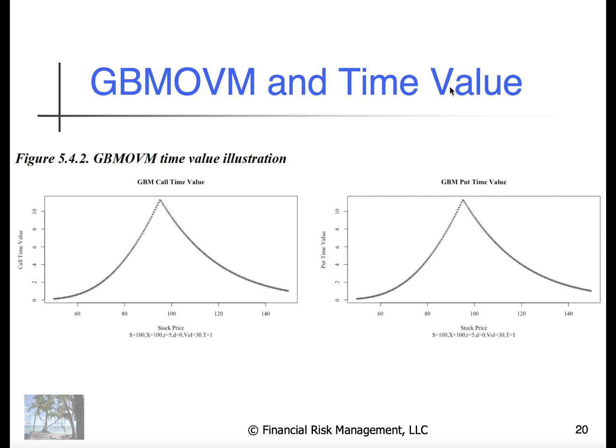This will be an issue we'll take up in module 5.5 on the arithmetic Brownian motion option valuation model, which assumes a normal distribution.